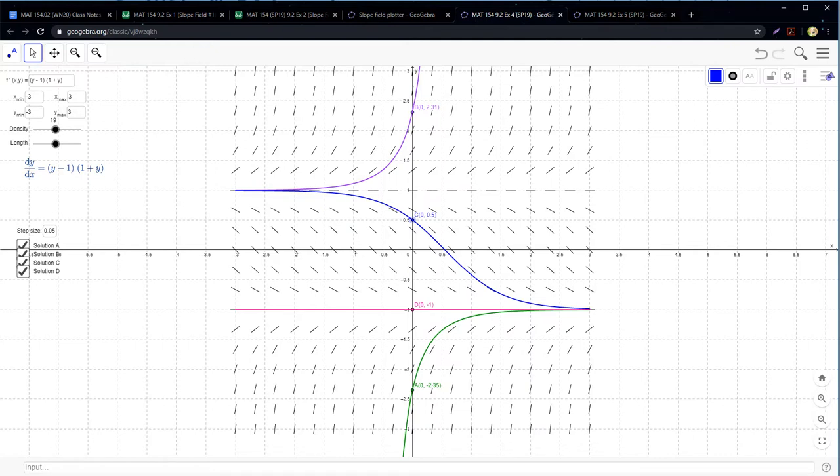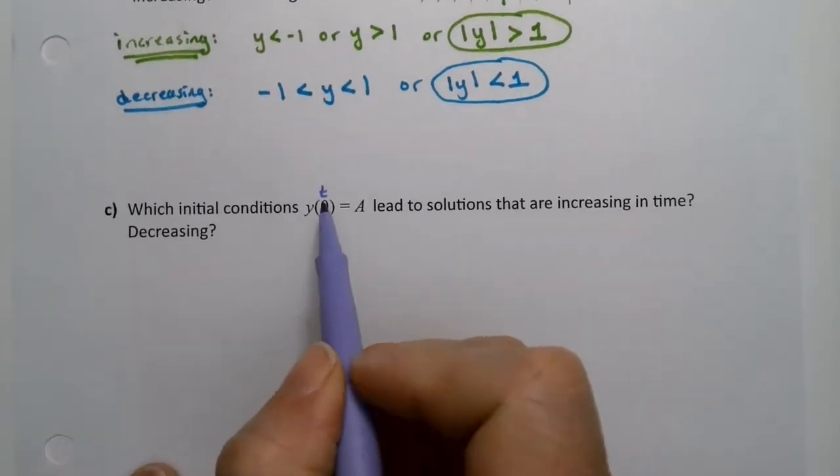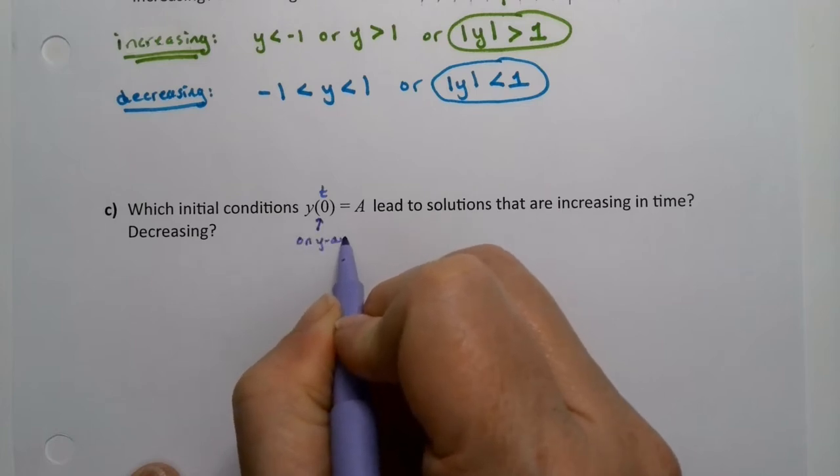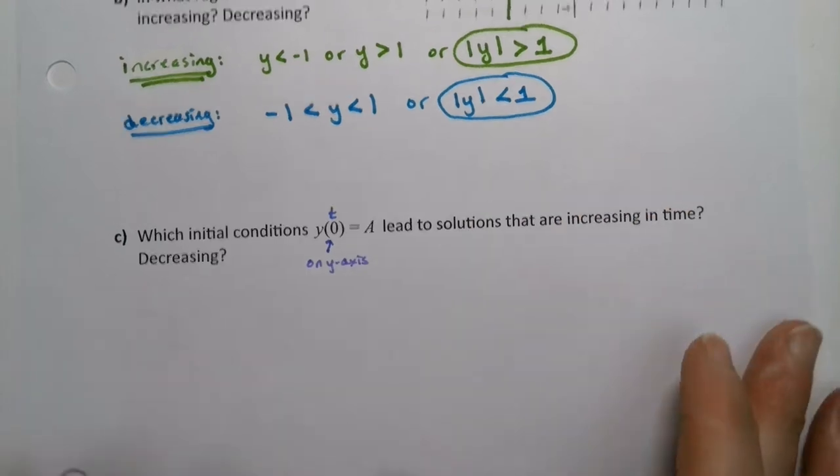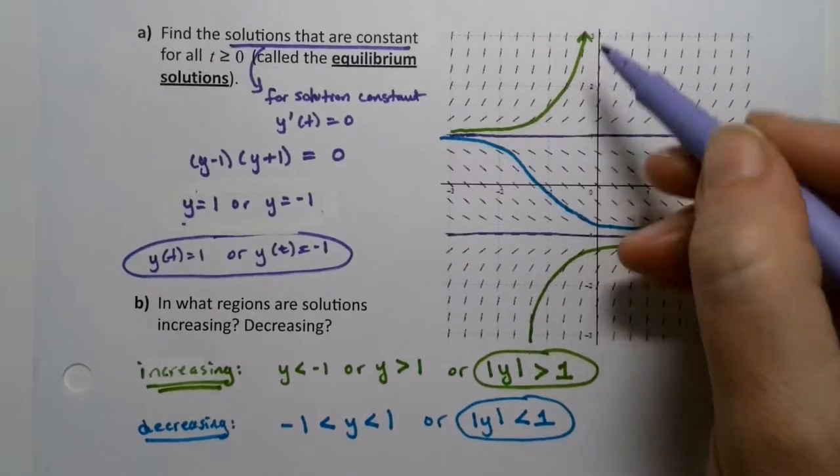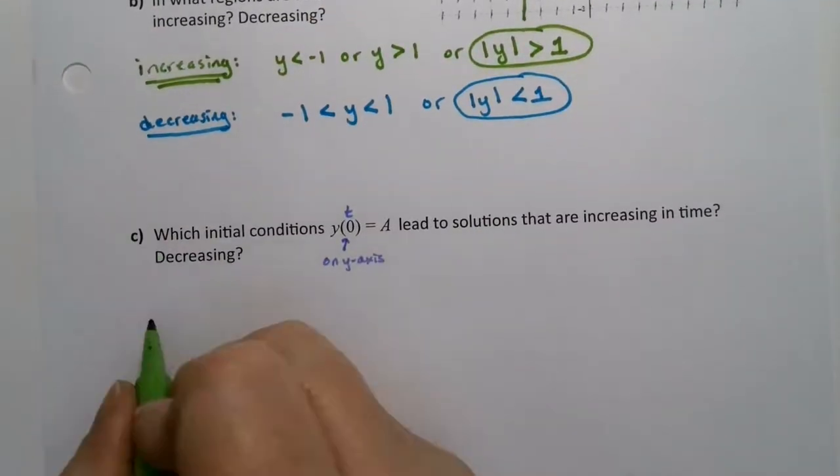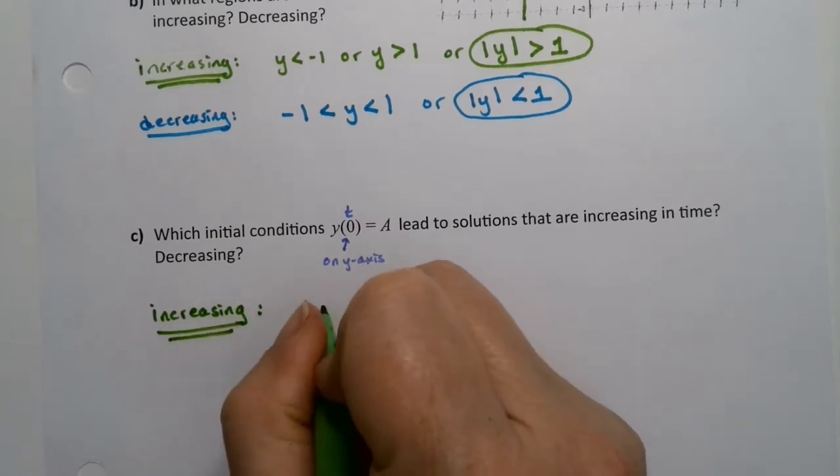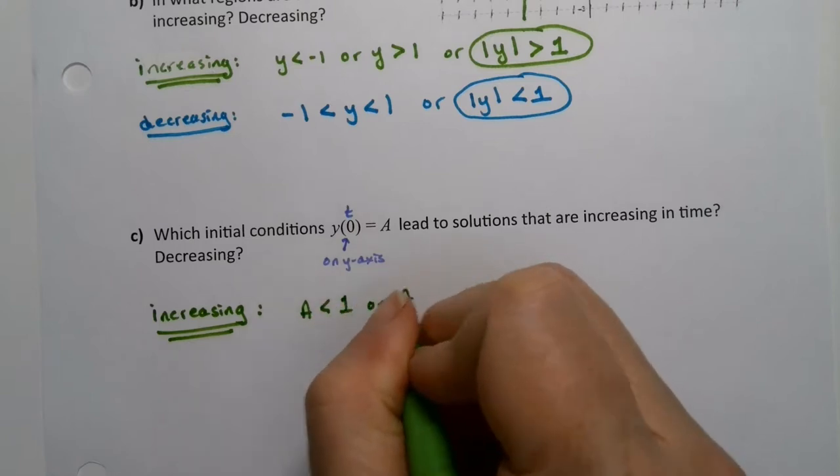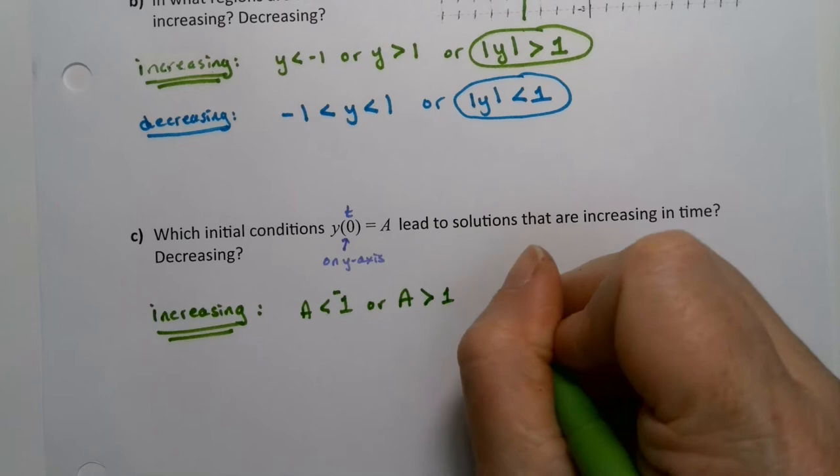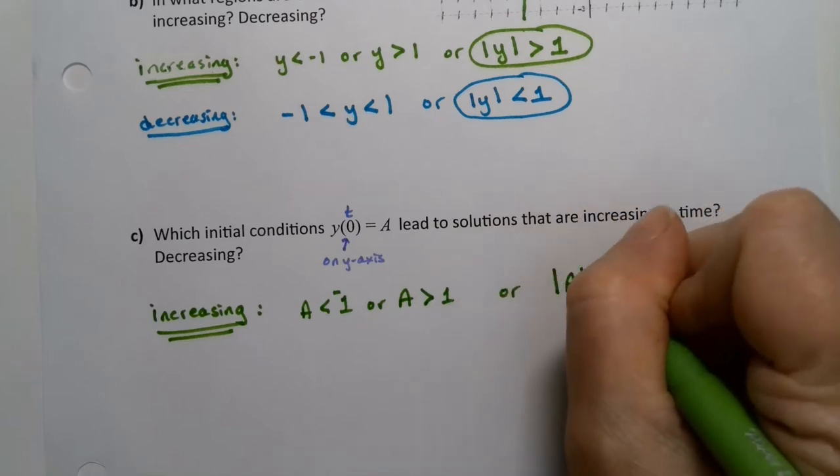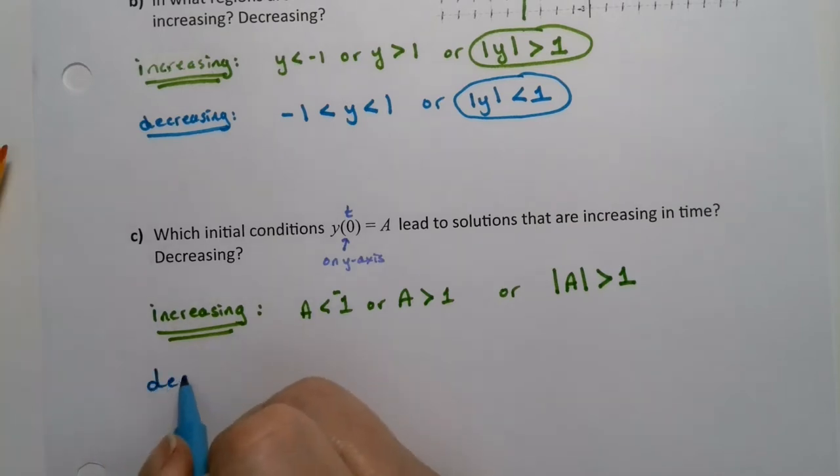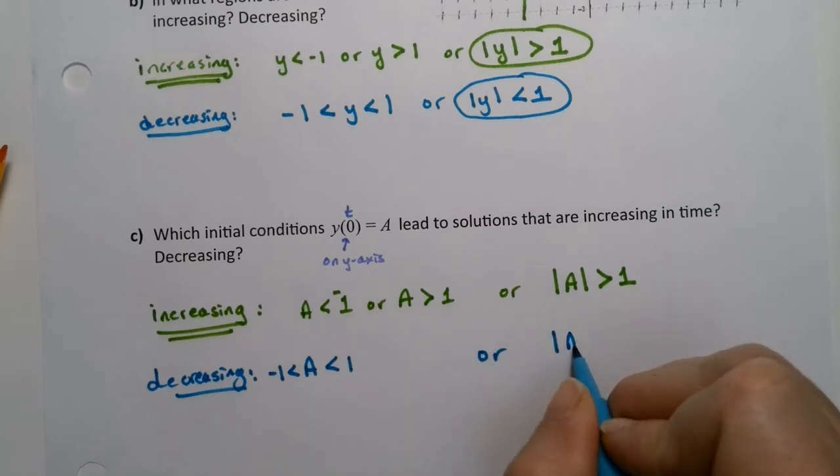So the t value is 0. In other words, we're sitting on the y-axis. What do you need to make your y value equal to to make this work? So if you're on the y-axis here, you're increasing. If you're here, you're increasing. So this particular graph works the same for both part B and part C. That might not always be the case. So I would need A < -1 or A > 1. In other words, |A| > 1. Decreasing would be -1 < A < 1. Or in other words, |A| < 1.